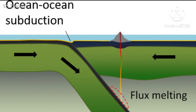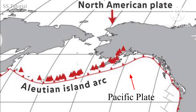If convergence occurs between two oceanic crusts, an oceanic trench forms where the comparatively denser plate goes down. Melting creates magma which rises up and forms volcanoes and volcanic islands, creating an island arc. This can be seen in the north Pacific Ocean where the Pacific plate is subducting beneath the North American plate, creating the Aleutian Islands.